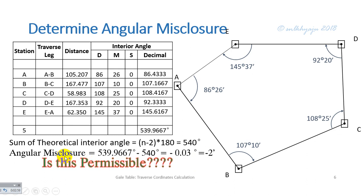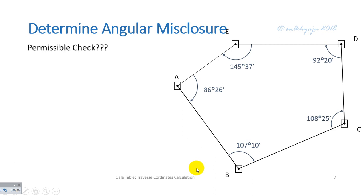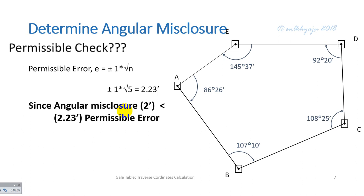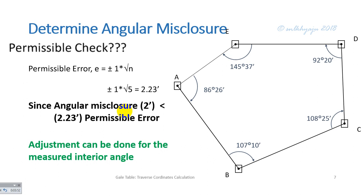We must check whether this −2 minute misclosure is permissible. The permissible error for angular misclosure is e = ±1√n, where 1 is the least count of the instrument — here 1 minute — and n is the number of traverse legs, which is 5. The permissible error is calculated as 2.23 minutes. Since our angular misclosure of −2 minutes is less than 2.23 minutes, it is within the permissible error, so we can proceed with adjustment.